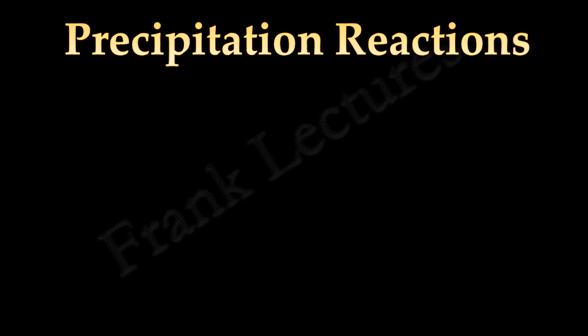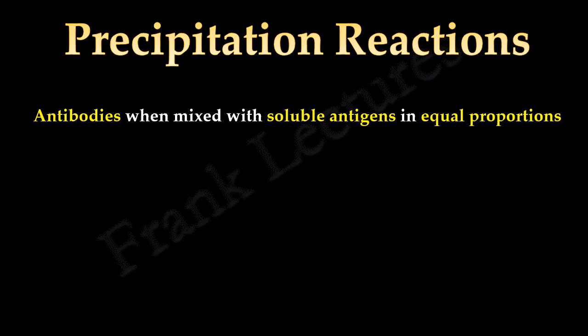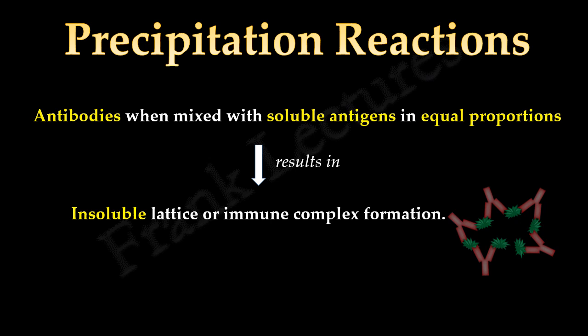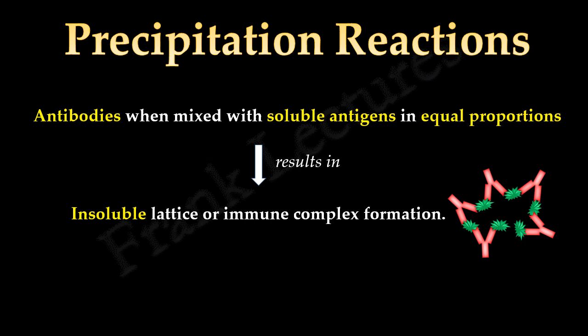So, now we understand that in precipitation reactions, antibodies when mixed with soluble antigens in equal proportions, results in lattice or immune complex formation which are insoluble. These insoluble complexes are called precipitates, and they are visible.